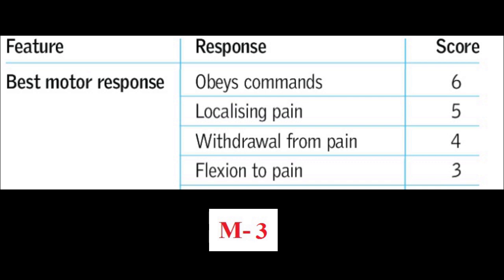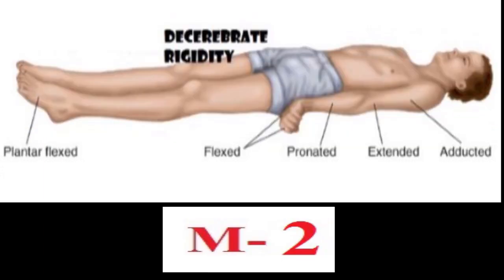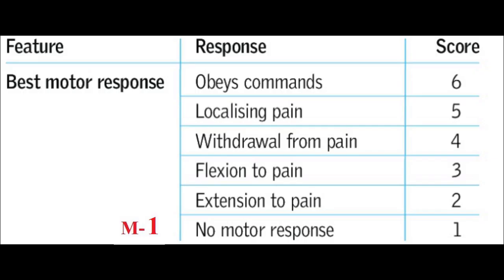M3 is abnormal flexion to pain — the limb to which the pain stimulus is given will be abnormally flexed, meaning a decorticate posture will be present. The opposite response occurs in M2, where the limb will be extended — a decerebrate posture will be present. The last and least score is M1, in which there is no motor response or movement of limbs even when the most painful stimulus is given.